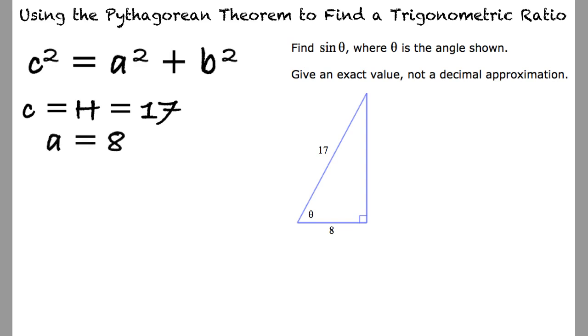I understand that the hypotenuse is the slanted line that is across from the right angle, but how do we know that 8 is the adjacent side and not the opposite side? Good question. The adjacent side is the side that forms the angle along with the hypotenuse, whereas the opposite side is the side across from the angle theta.